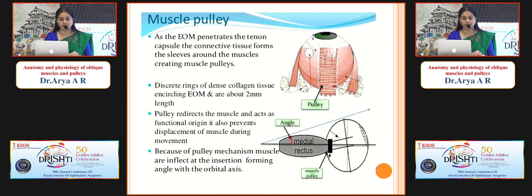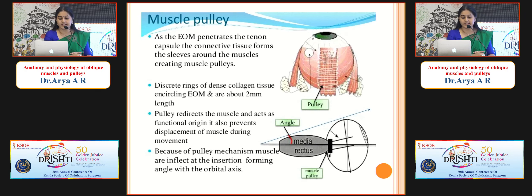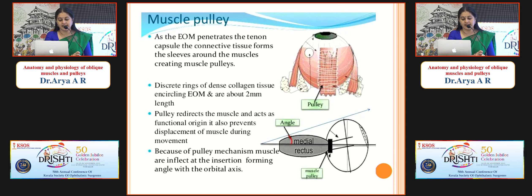Coming to muscle pulleys: as the extraocular muscle penetrates Tenon's capsule, the connective tissue forms sleeves around the muscles creating muscle pulleys. These are discrete rings of dense collagen tissue encircling the extraocular muscles, about two millimeters in length. The pulley redirects the muscle and acts as a functional origin. It also prevents displacement of the muscle during movement.